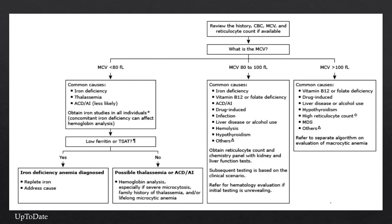Here's the chart that most people use in practice and on the exam to diagnose the cause of anemia. It uses the MCV. If you have a microcytic anemia, you go to that section; normocytic anemia goes to its section; and macrocytic is over here. This video is really meant as an overview, and we'll go through each section without going into each individual type in depth.